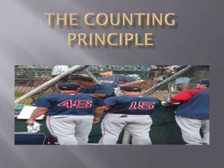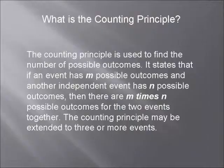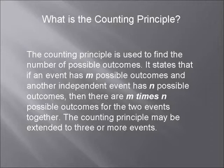The Counting Principle is used to find the number of possible outcomes. It states that if an event has m possible outcomes and another independent event has n possible outcomes, then there are m times n possible outcomes for the two events together. The Counting Principle may be extended to three or more events.